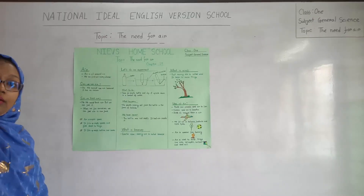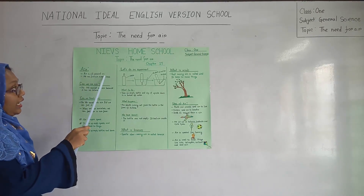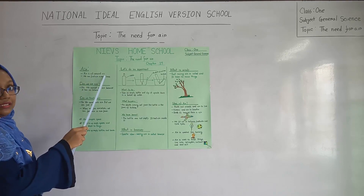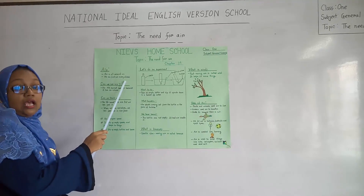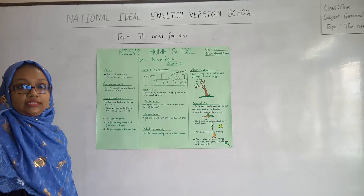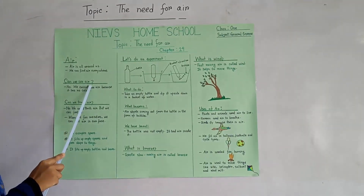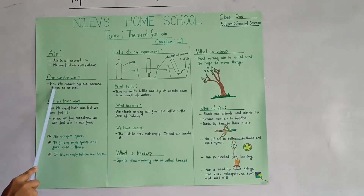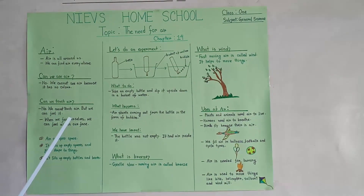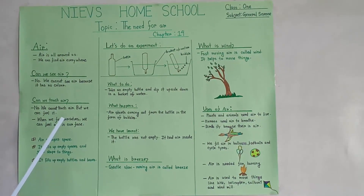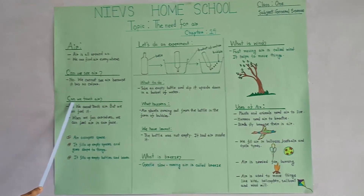We all know about air. Air is all around us. We can find air everywhere. Now there are some questions. First one: can we see air? No, we cannot see air because air has no color.